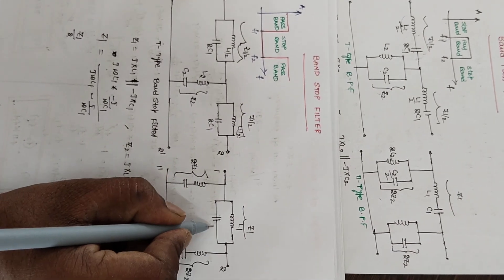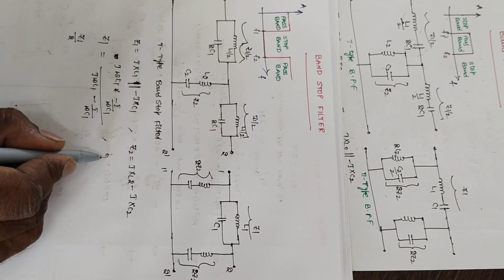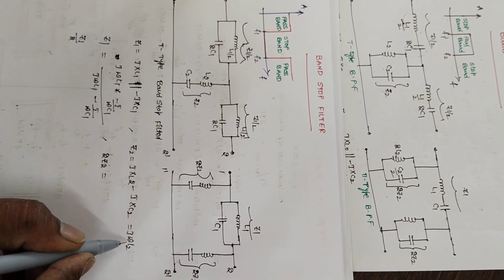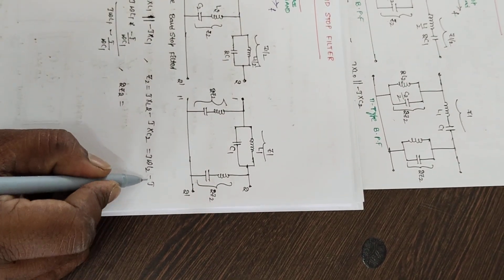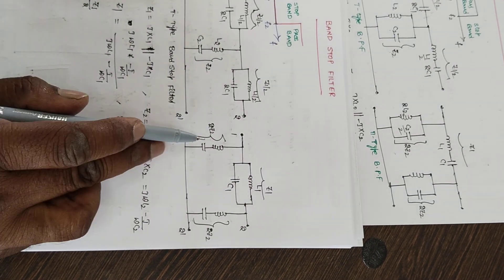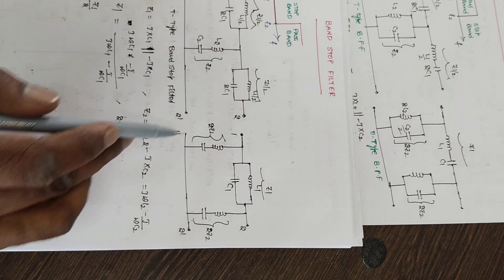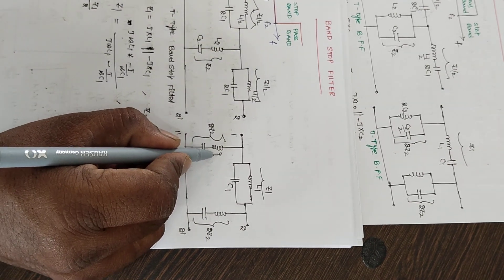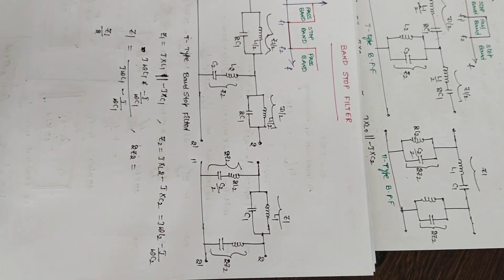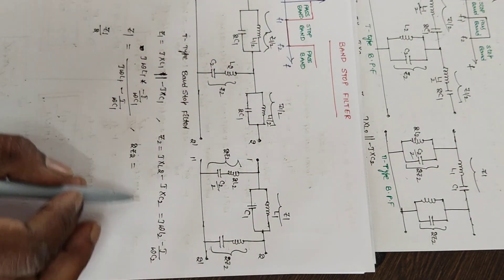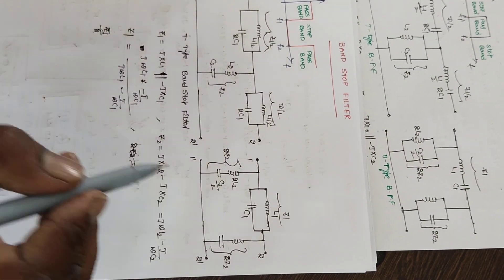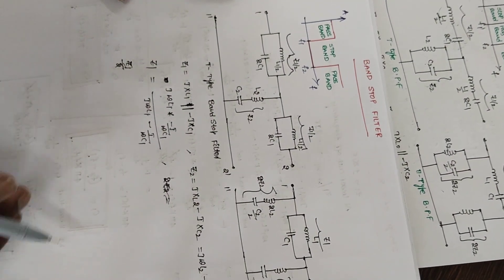For the Z1 branch in the pi-type it is only Z1, so components are L1 and C1. If I find 2·Z2 — since Z2 equals j·ωL2 minus j divided by ωC2 — multiplying by 2 makes the inductor 2L2 and the capacitor C2/2. This concept was also explained in the previous video.